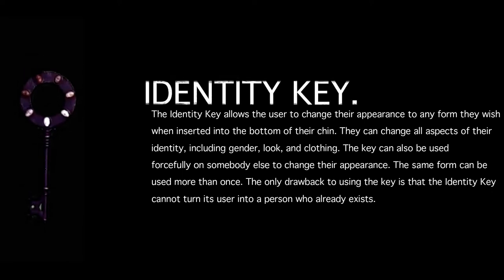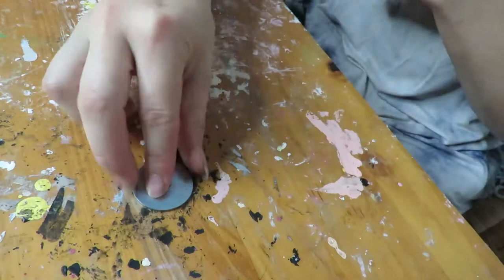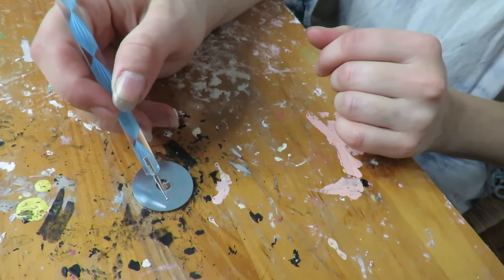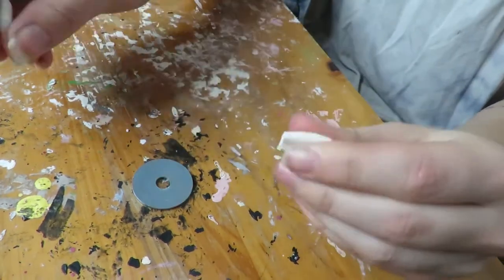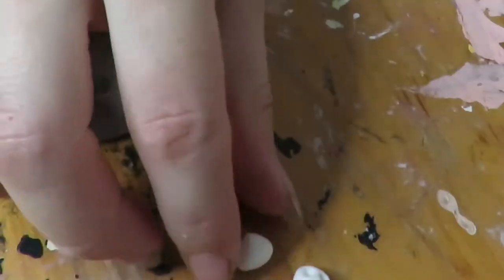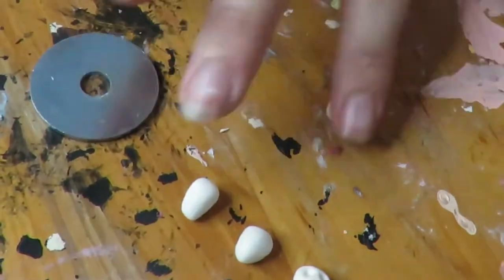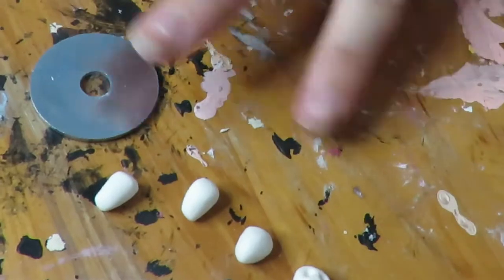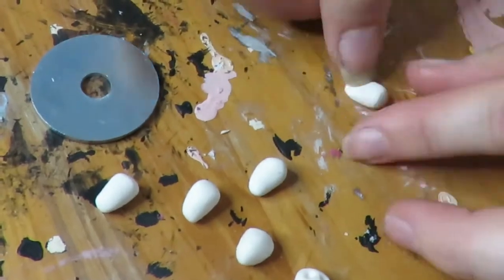All right, so first ones first, let's start out the Identity Key. To make this, I'm starting out with a washer and I'm planning out where I'm going to be putting each of the heads, which I'm simply making out of clay. These are really small skulls, so I had to be very particular about the faces I was making.